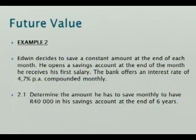Now, look. Determine the amount he has to save monthly. Determine the amount that Edwin has to save monthly to have 40,000 rand in his savings account at the end of six years. Yes, let's read that slowly. Edwin wants to save an amount every month. He wants to know, how much must I save every month?